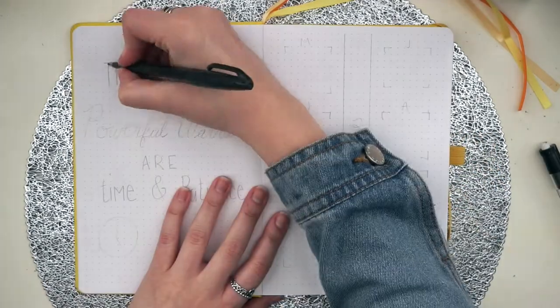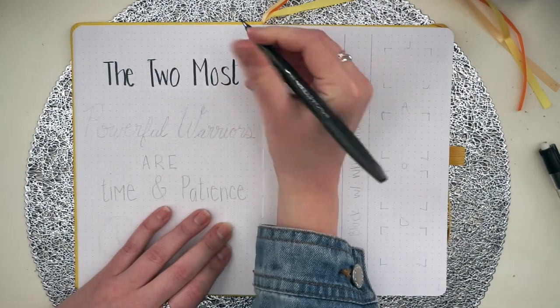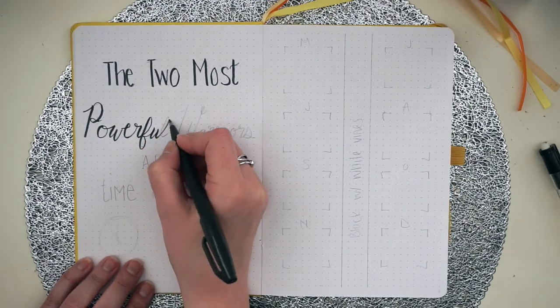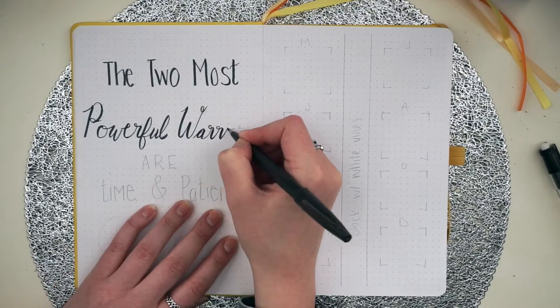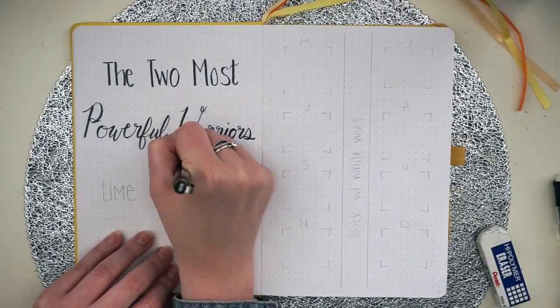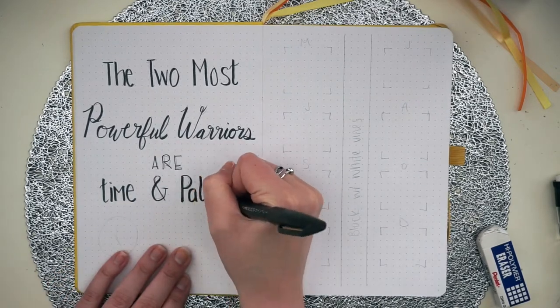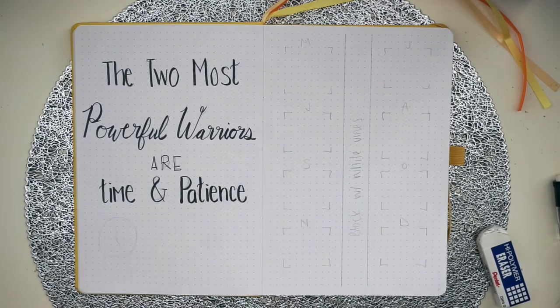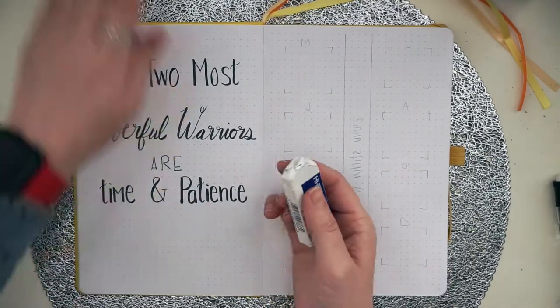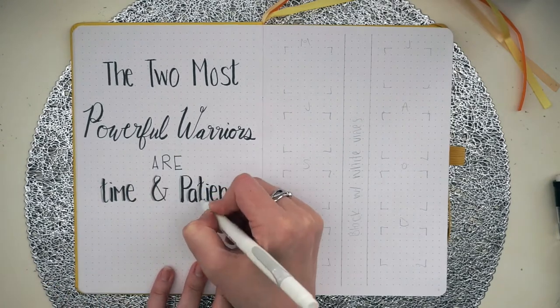Now we're getting to the fun stuff and probably the most tedious part of starting a bullet journal. I'm starting out with a little quote page. I used this in my other journal and I just really liked this quote. It says, the two most powerful warriors are time and patience. Writing this out, I'm doing some normal hand lettering and then some cursive using my Pentel sign pen. I'm erasing because I did this all in pencil beforehand and now I am shadowing with my Zebra Mildliner in gray, just time and patience.